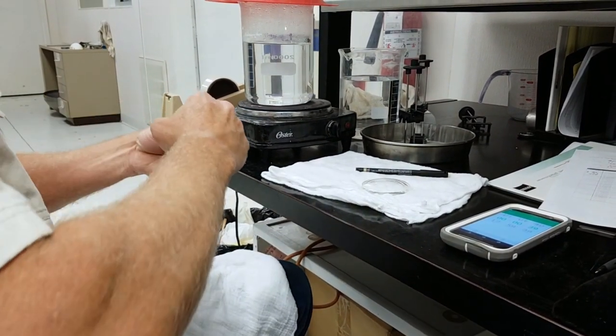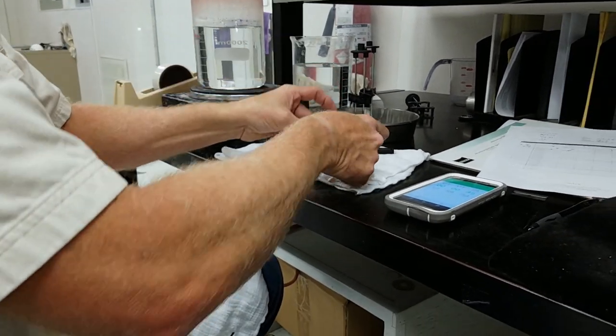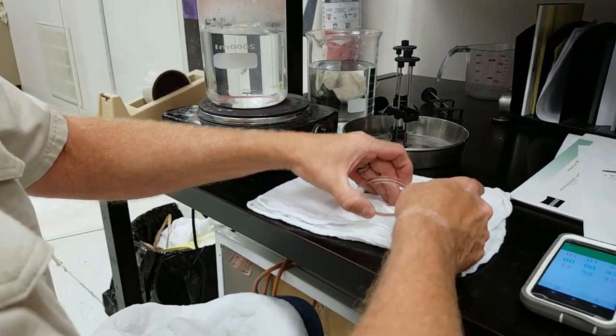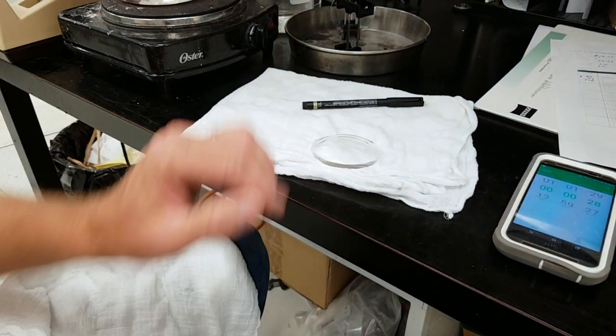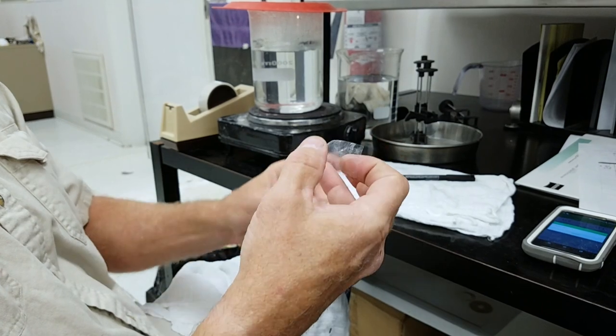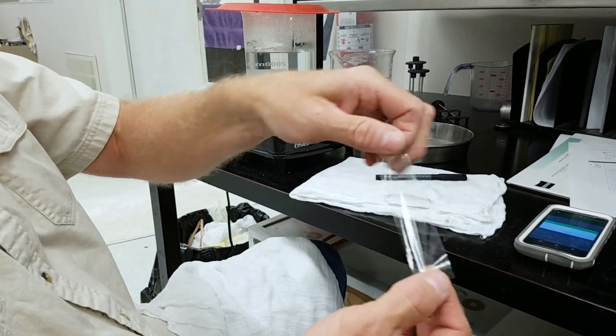After scoring, we move to the lift-pull test. This is done with a special tape designed specifically for the test. The tape is firmly pressed across the grid and allowed to sit for 30 seconds. After that, the tape is lifted away and closely examined for any AR layers that may have pulled off.